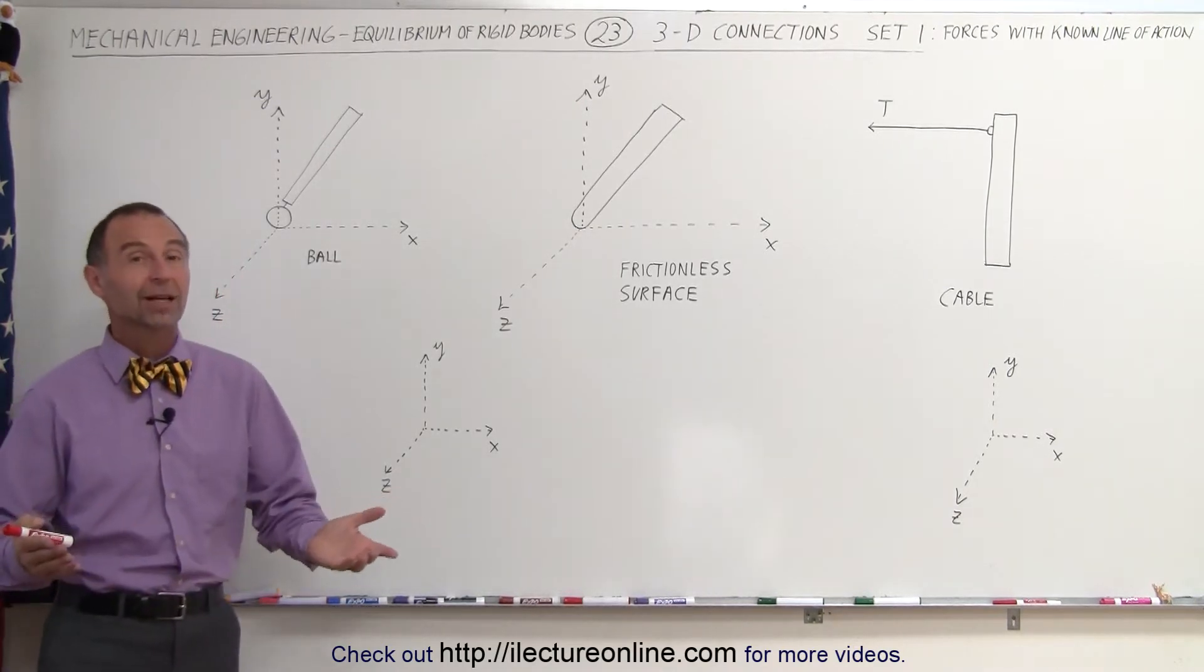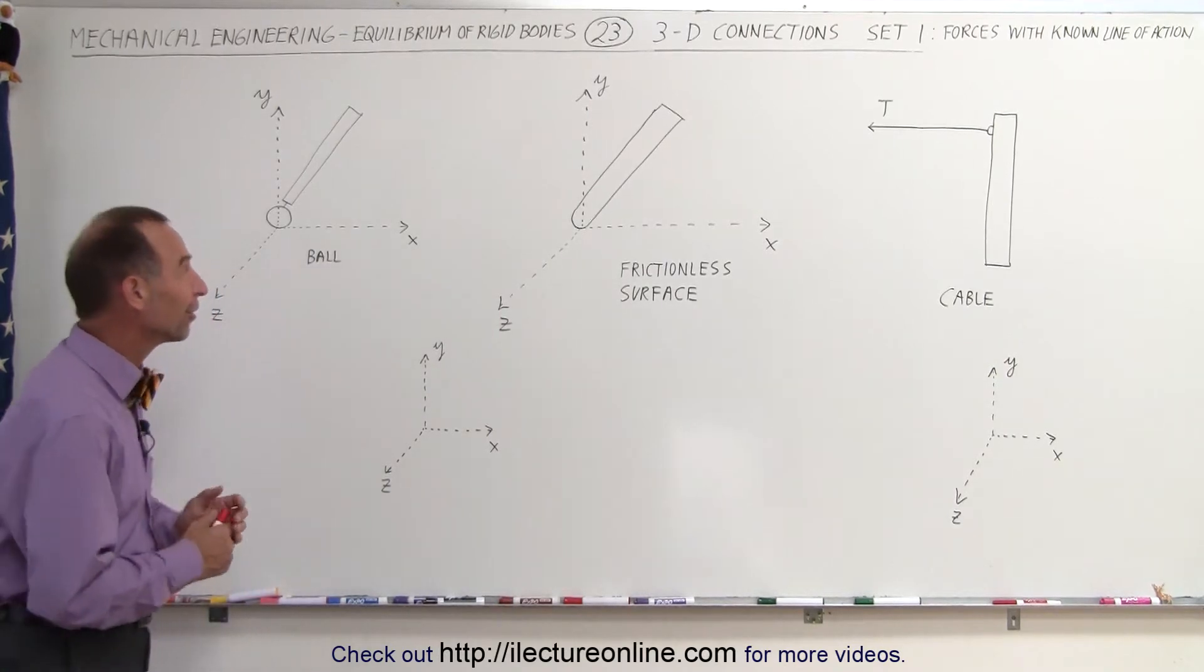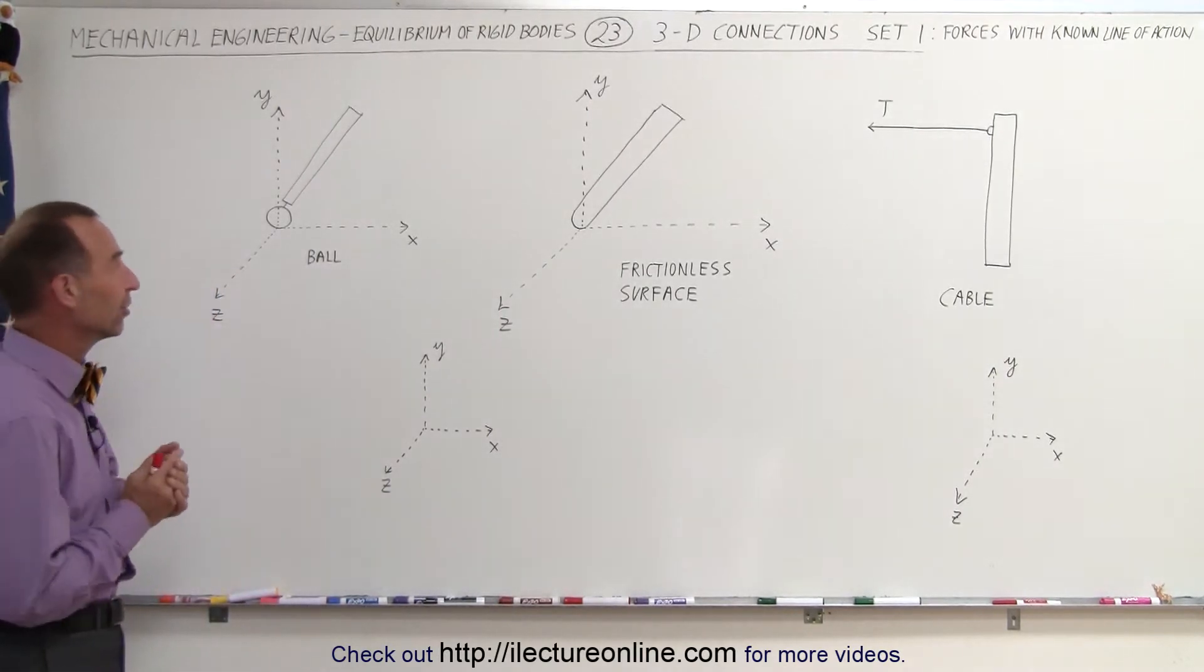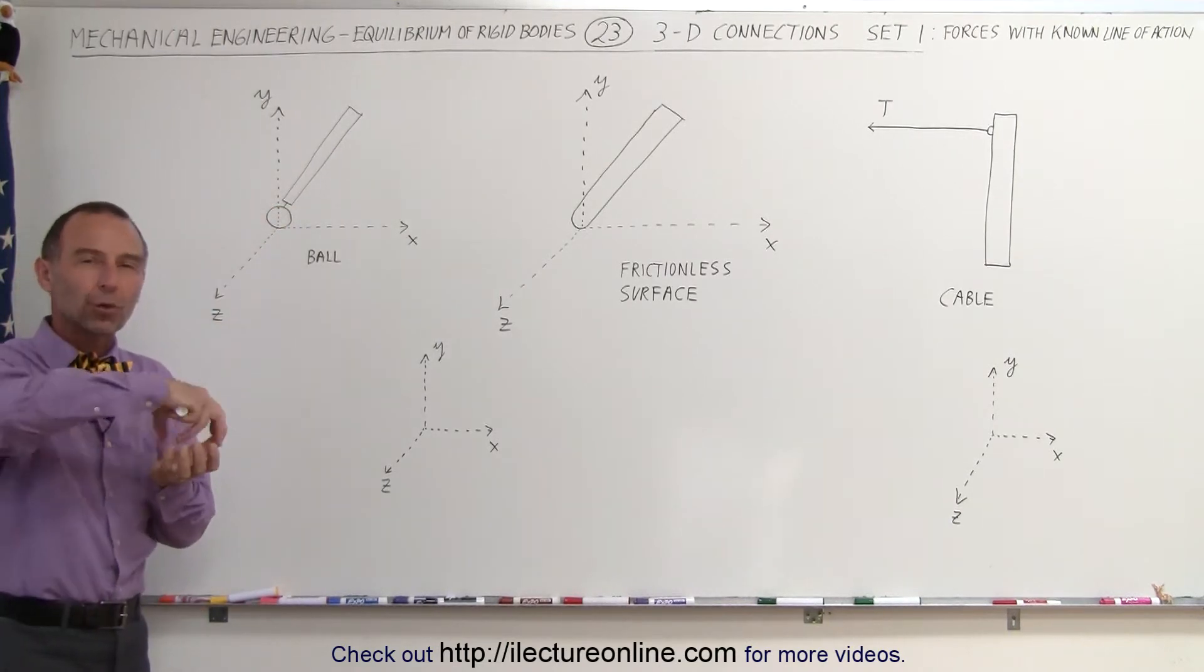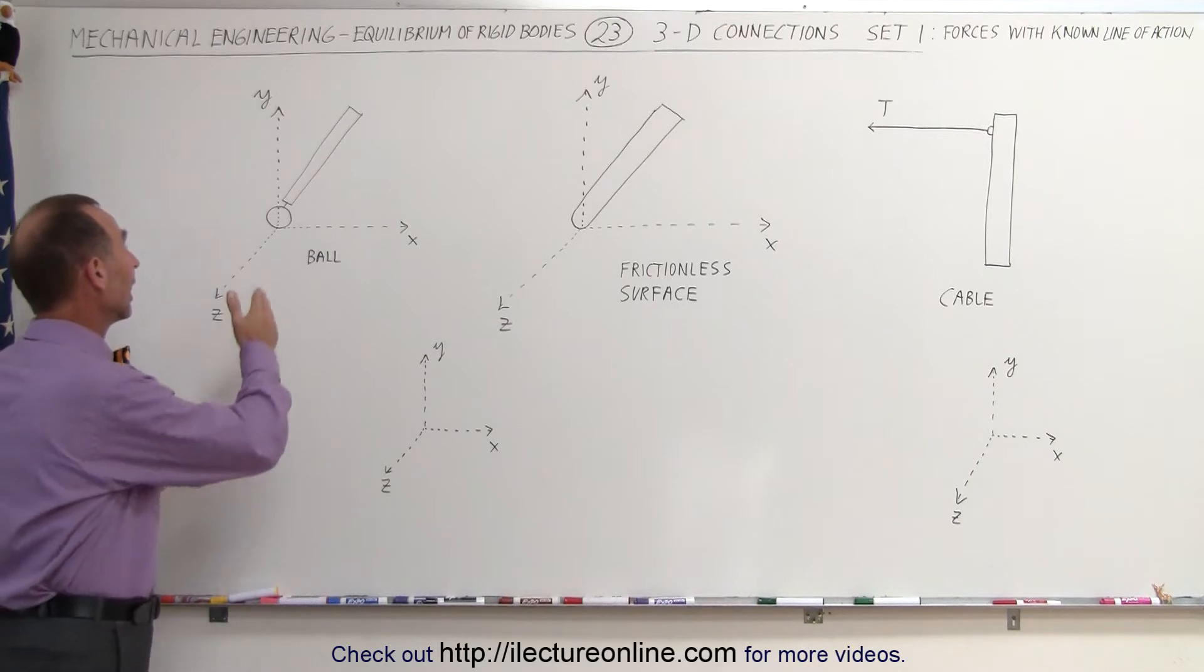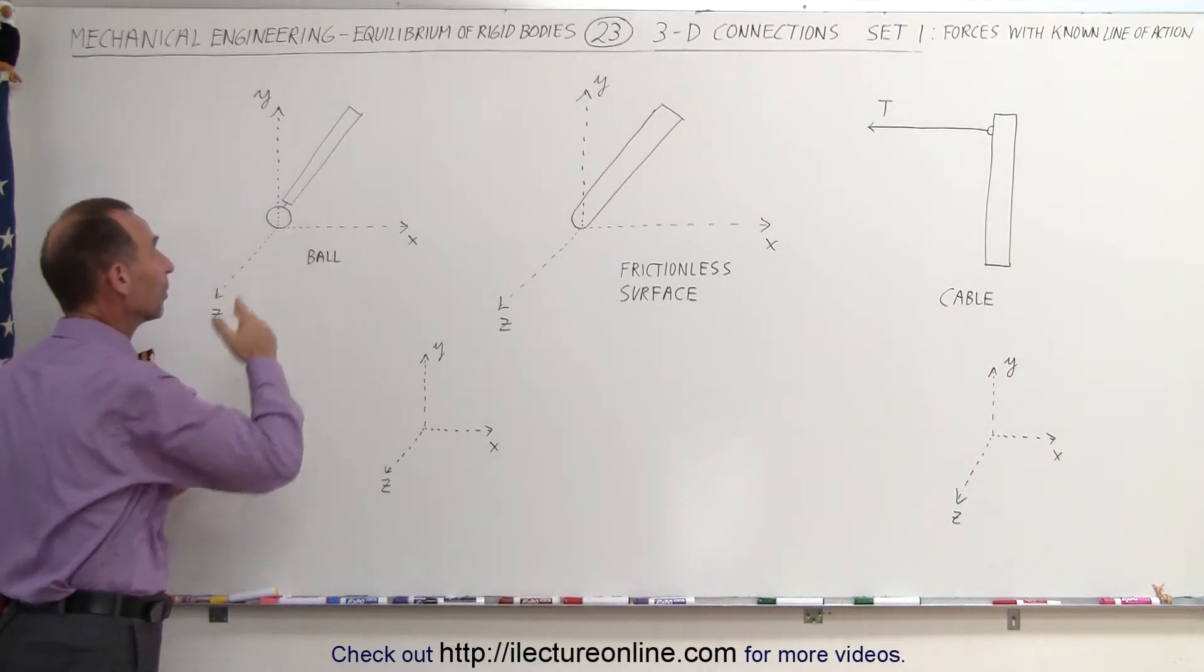But the first ones appear to be like they are 1D connections because the force only acts in one direction. Case in point, let's say we have a support that's resting on a ball and the ball is able to rotate in any different direction so that it can go anywhere in the XZ plane.